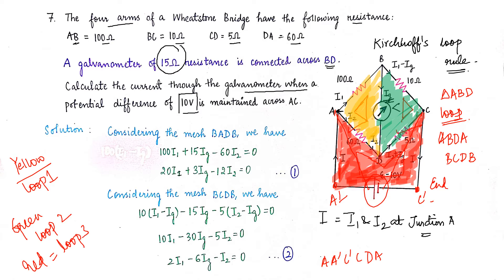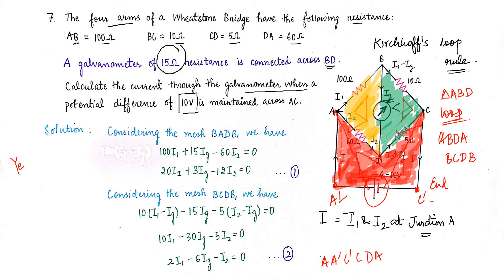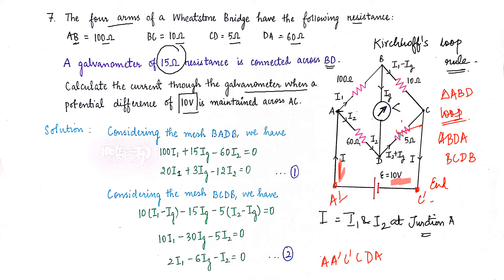You should never highlight loops in your own work — I am only doing this to help you understand which loop is taken as the first, second, and third, and how I have decided to choose each loop. From these loops we have to find the corresponding equations which will help us find the current flowing through the galvanometer.